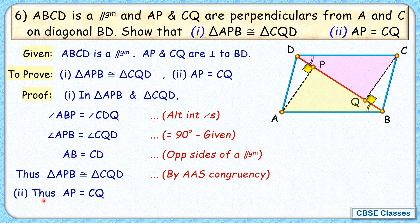Second, by CPCT, AP and CQ lengths are the corresponding parts of congruent triangles, so by CPCT they are equal. And that's the second part we had to prove, and hence proved.